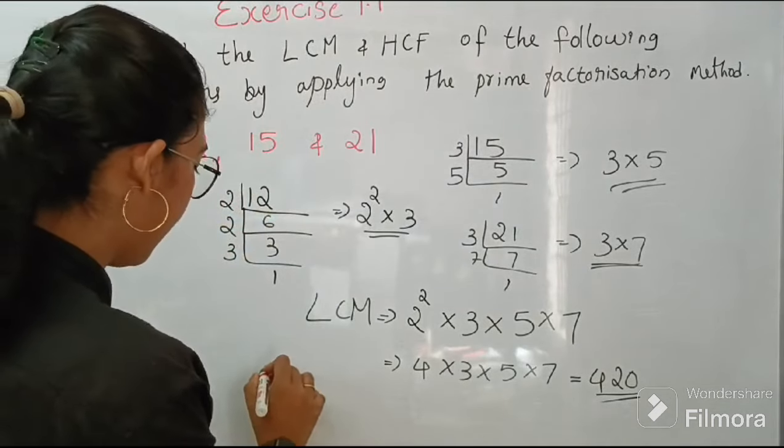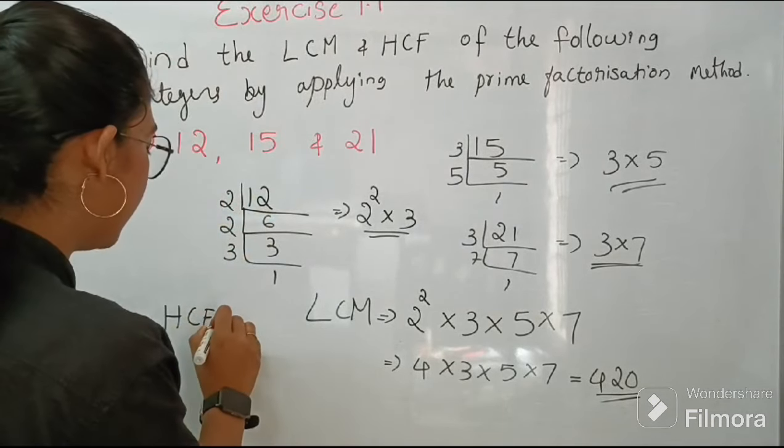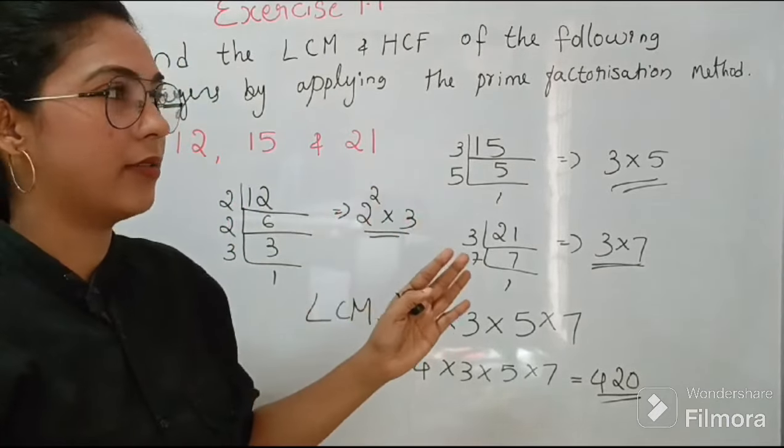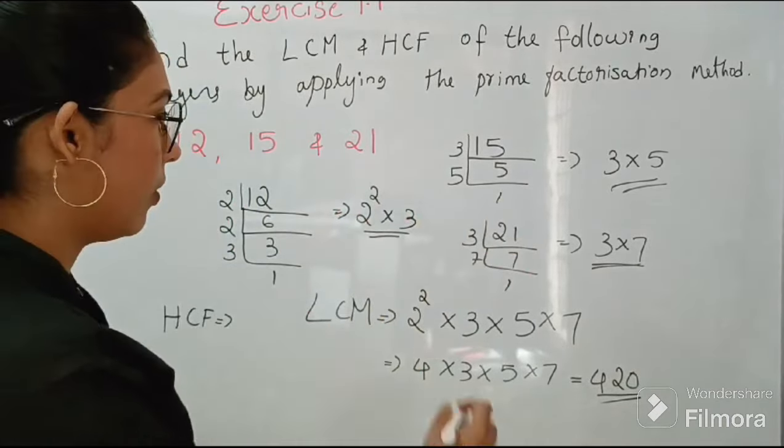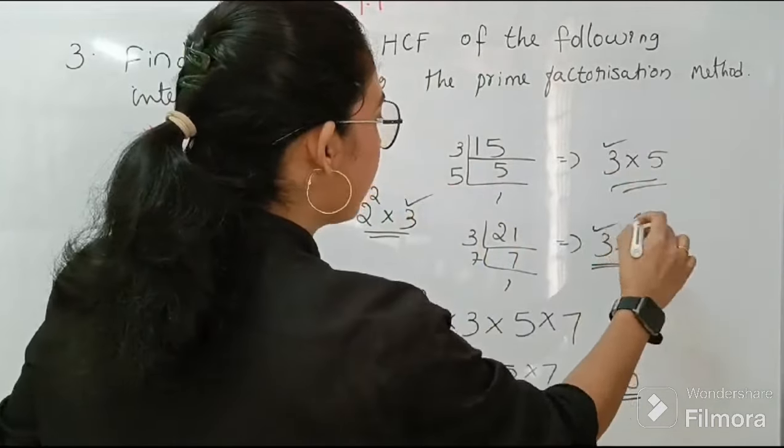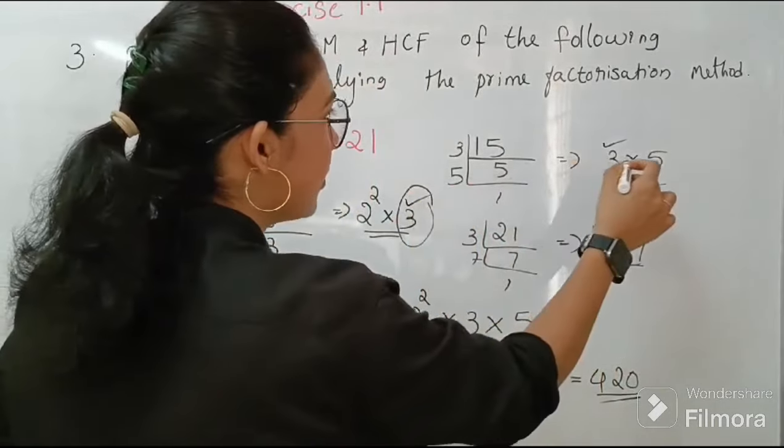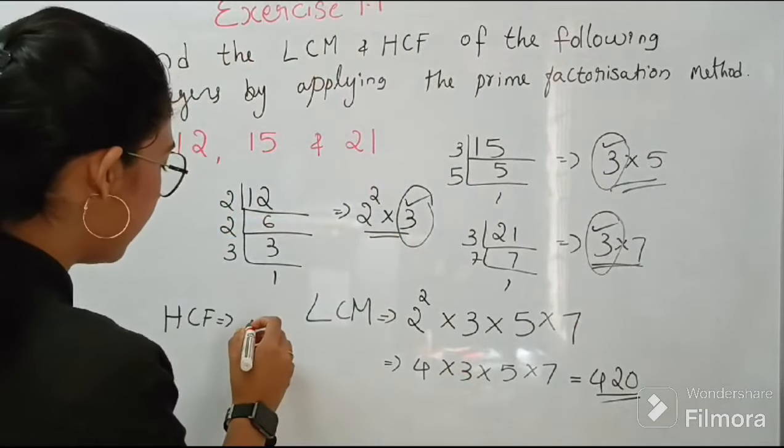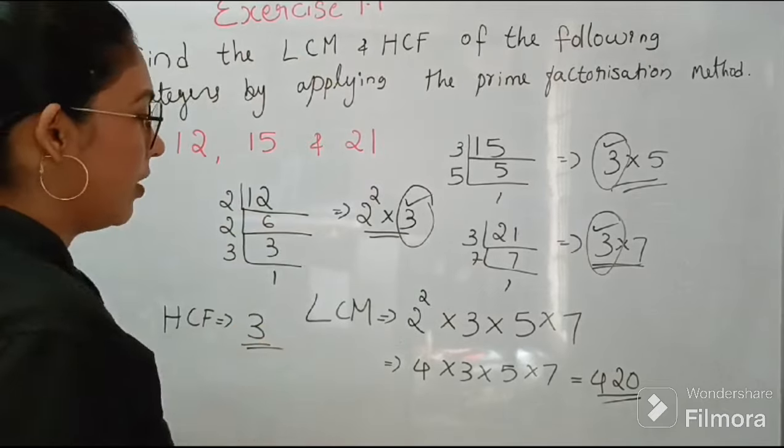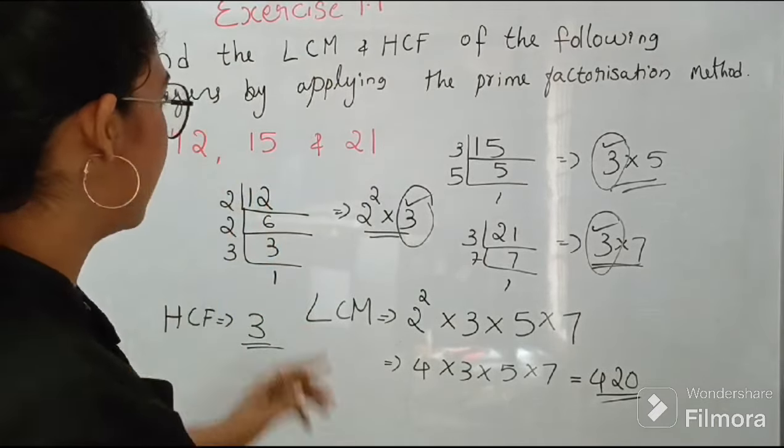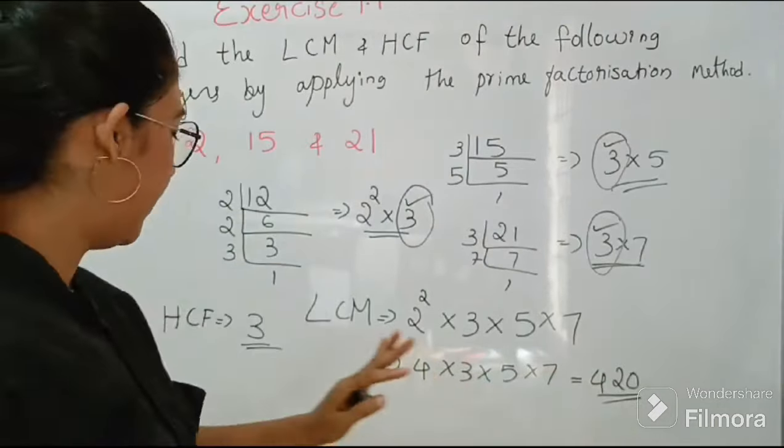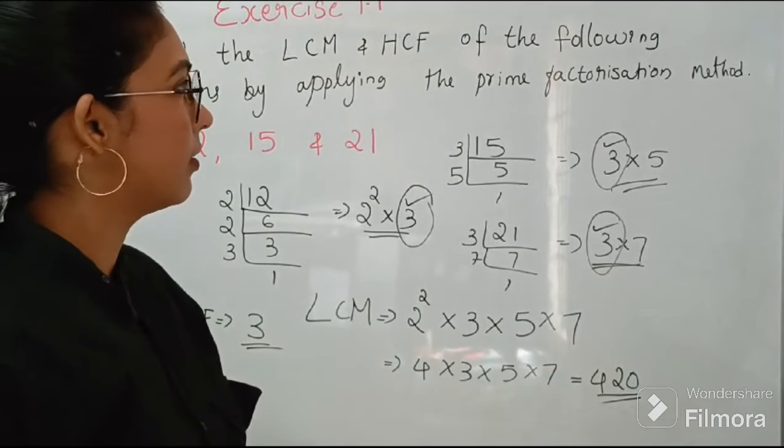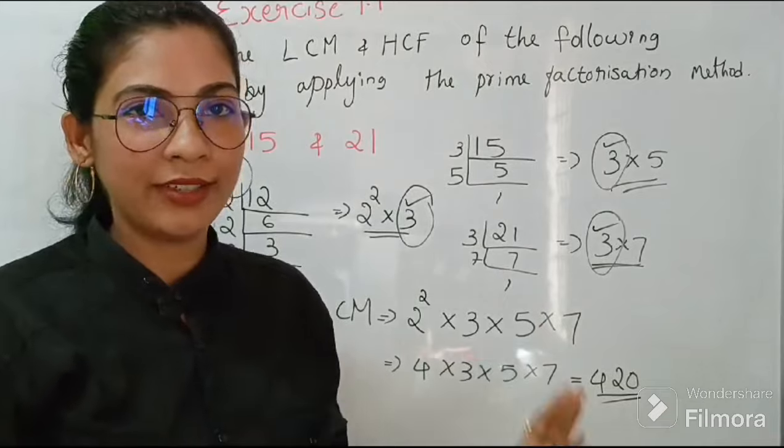Then what about HCF? HCF is the smallest power of each common factor involved in the numbers. What are the common factors? Here 3 is a common factor in all these 3 numbers. So HCF can be written as 3. So in this question LCM is 420 and HCF is 3. Hope you clear this question.